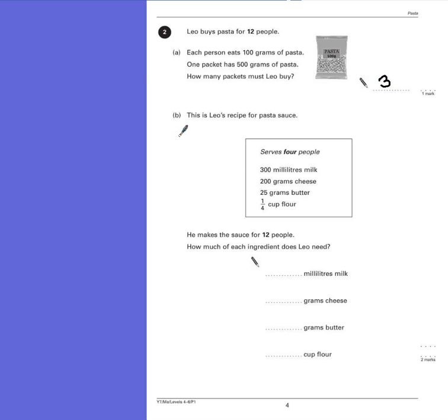Part B. This is Leo's recipe for pasta sauce. It serves 4 people: 300ml of milk, 200g of cheese, 25g of butter, and a quarter of a cup of flour. He makes the sauce for 12 people. How much of each ingredient does Leo need?